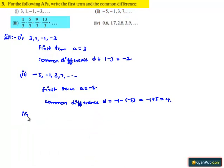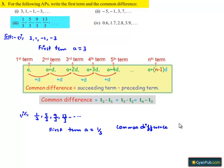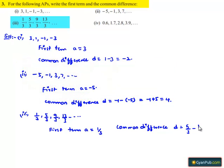Now moving on to the third bit, the series given is 1/3, 5/3, 9/3, 13/3, and so on. Here the first term A is given by the first term in the series, that is nothing but 1/3. And the common difference D is equal to 5/3 minus 1/3, that is second term minus first term, which is equal to 4/3.